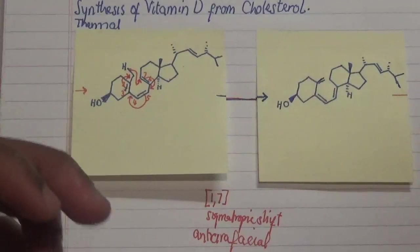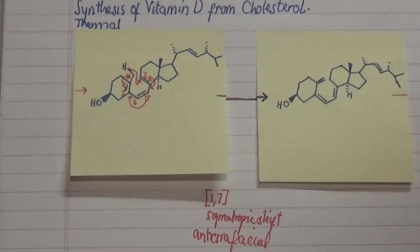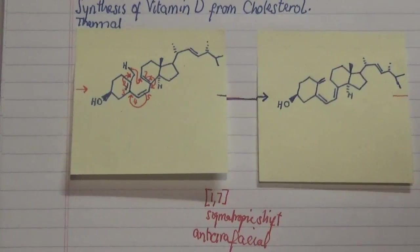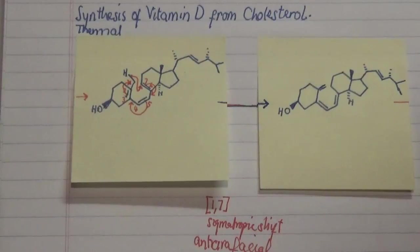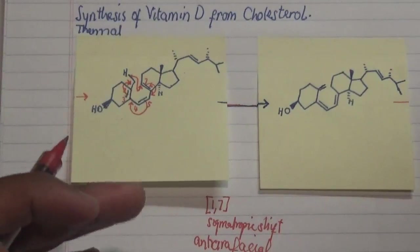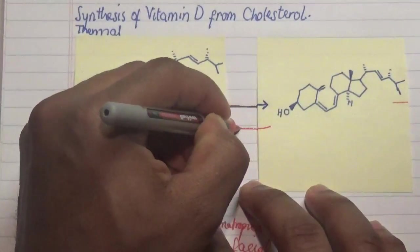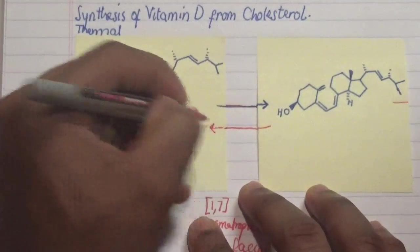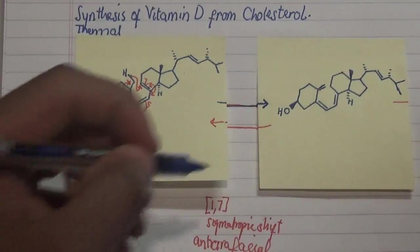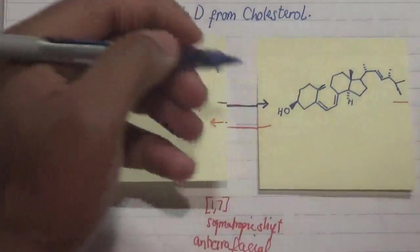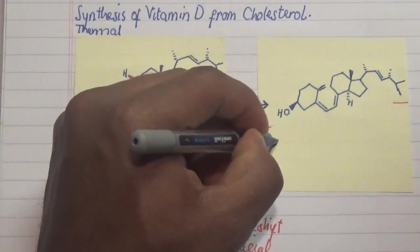However, if you're looking at the other case where it's done photochemically, then in a photochemical sense we are going in the reverse direction — from vitamin D back to cholesterol. Since our hydrogen is going in the reverse direction, it must actually be favored as a suprafacial 1,7-hydrogen shift.